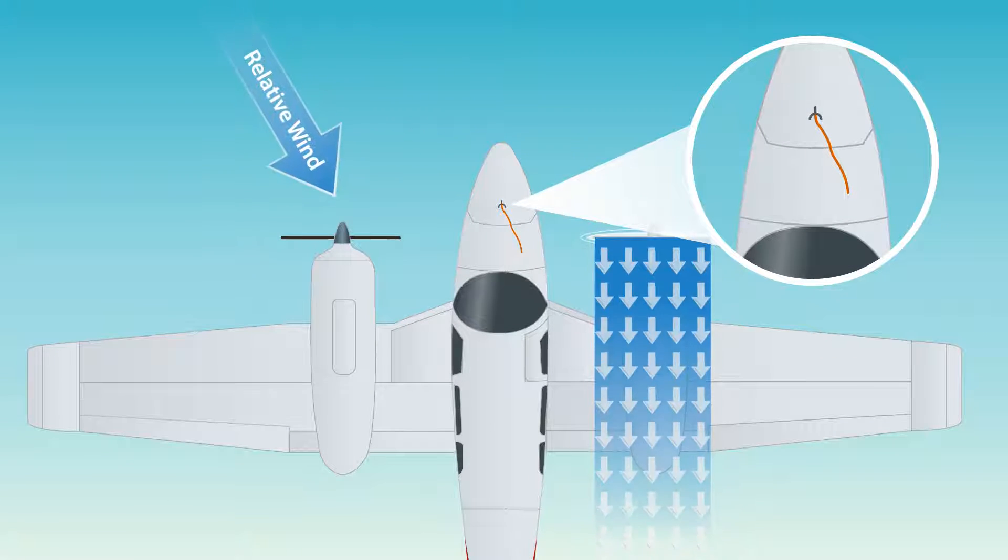A yaw string is a piece of string about 18 to 36 inches in length, taped somewhere along the centerline between the nose to the base of the airplane's windshield.